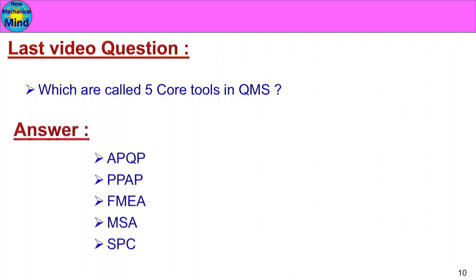The answer is APQP, PPAP, FMEA, MSA and SPC. These are the 5 core tools in the quality management system. The last version of ISO 9001 is 2015.